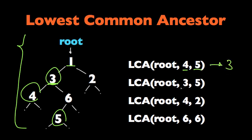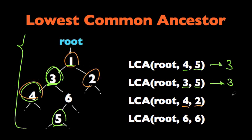The LCA, the lowest common ancestor, of three and five would be three again — so LCA could be one of the given elements. And the LCA of four and two would be one. And the LCA of six and six, the same element, would be this element itself.